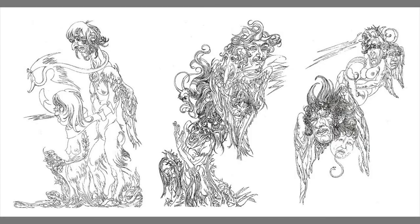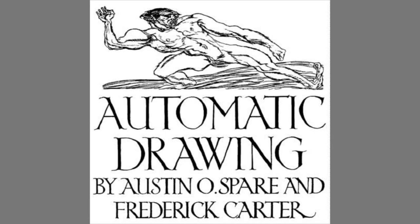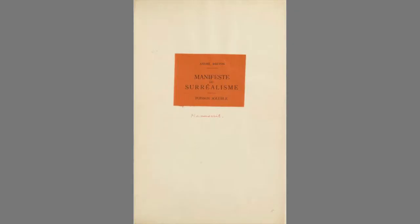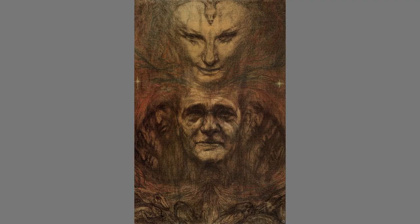He published a text called Automatic Drawing in 1916, but he was doing automatic drawings as early as 1900. This technique was either picked up or discovered independently by the Surrealists a bit later — André Breton published the first Manifesto of Surrealism in 1924, so that's quite a bit later than Austin Spare's Automatic Drawing.